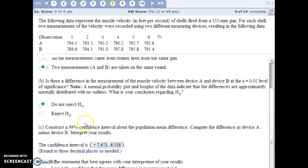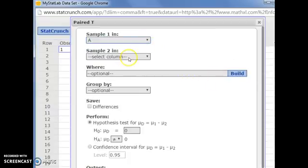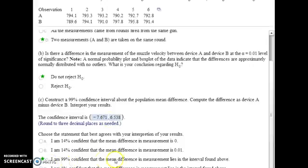And the last part of the problem is to construct a 99% confidence interval about the population mean difference. So jumping back into StatCrunch, I'm again going to use t-stats paired, comparing A and B. I'm doing a confidence interval now. And to confirm it was 99% confidence, so I need to enter 99% here. And when I hit compute, it will give me the lower limit and upper limit of my confidence interval. So what this means is that we're 99% confident that the mean, the average difference between our measurements between these two devices, is somewhere in this interval.